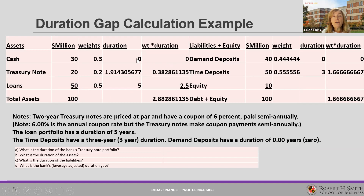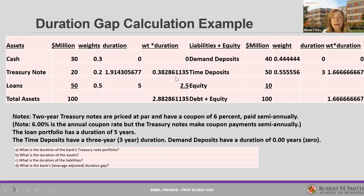We multiply the weights by their durations and sum them. The duration of the treasury note is approximately 1.9; multiplied by 0.2 gives a weighted duration of 0.38. Zero times anything is zero for cash. Loans are half the portfolio with a duration of five years: 5 times 0.5 gives a weighted duration of 2.5. Adding zero plus 0.38 plus 2.5 gives us 2.88 plus further decimal places.